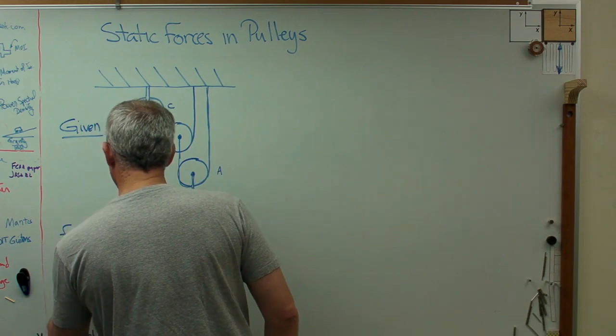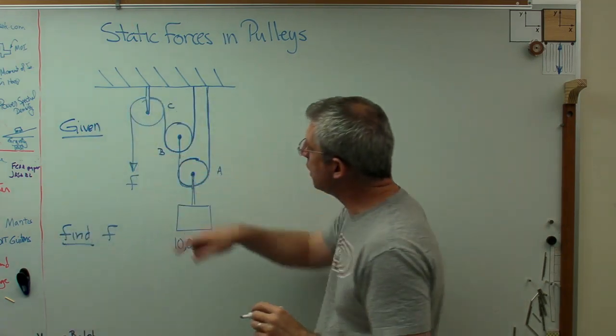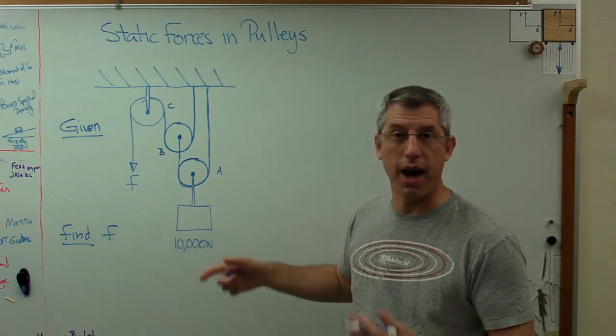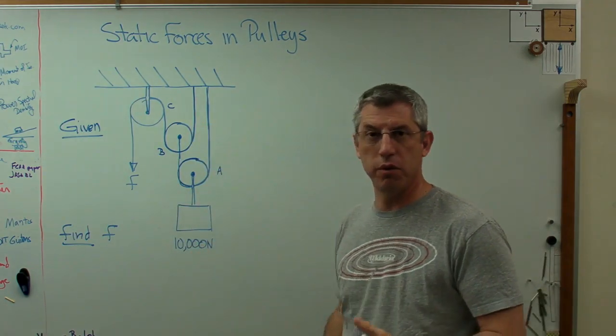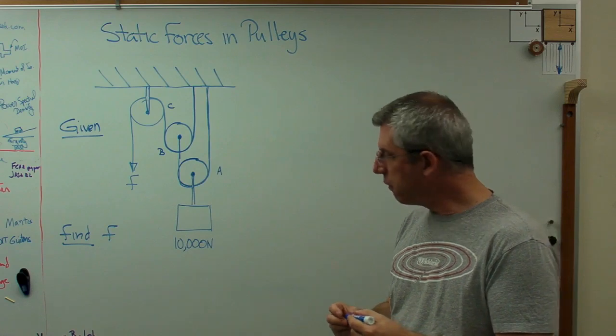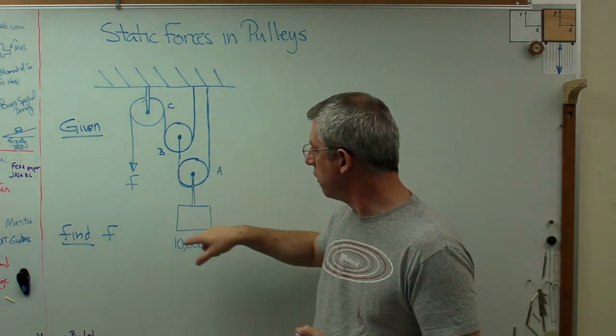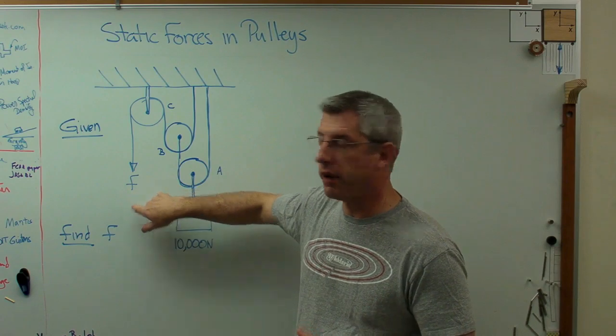And we're going to need to find the force F, the tension in that rope. How hard do you have to pull on this to lift that? That's the whole point of a system of pulleys like that, is to magnify the force at this end so you can lift more here than the force there.